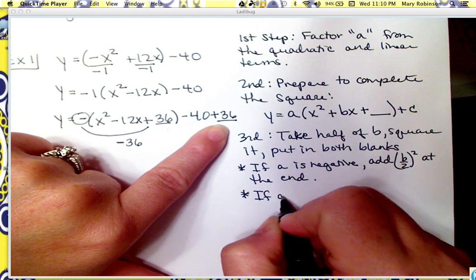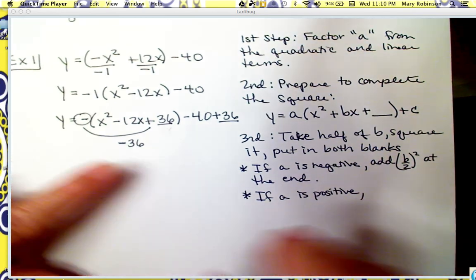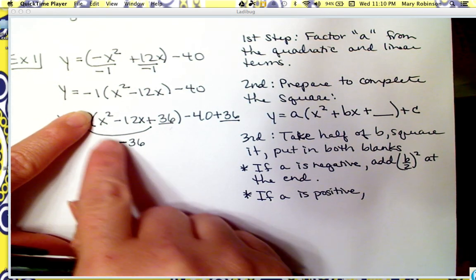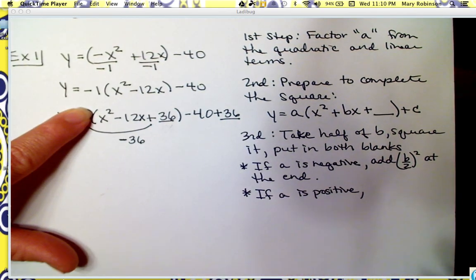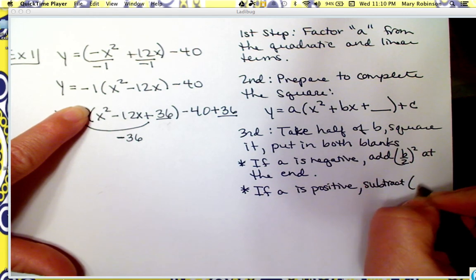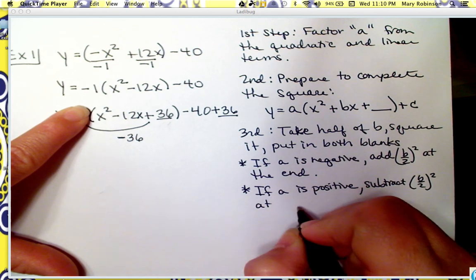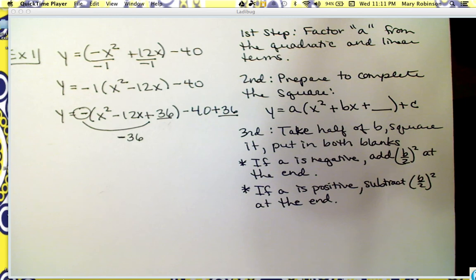If a is positive — for instance if it was just a positive 1 — then we would be adding 36 on the inside, and to make it cancel out we'd need to subtract at the end. So if a is positive, we subtract whatever that value is — our half of b squared — at the end. That's really the only place where this differs from what we were doing before.